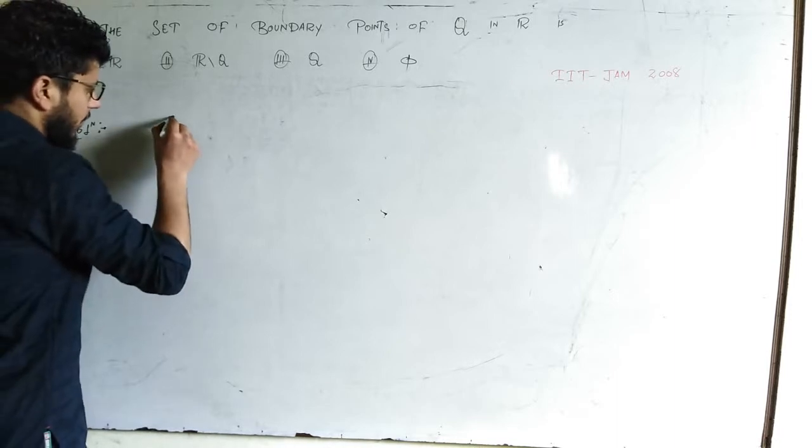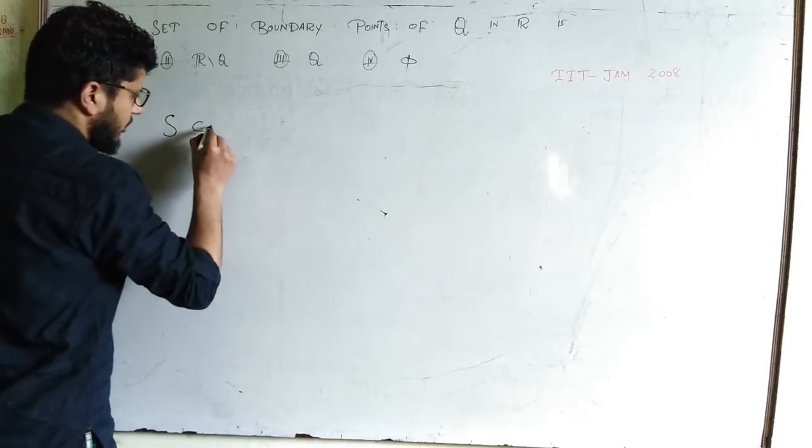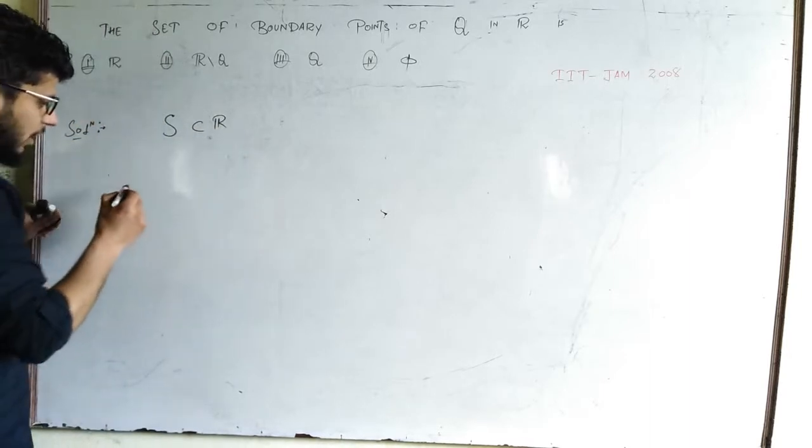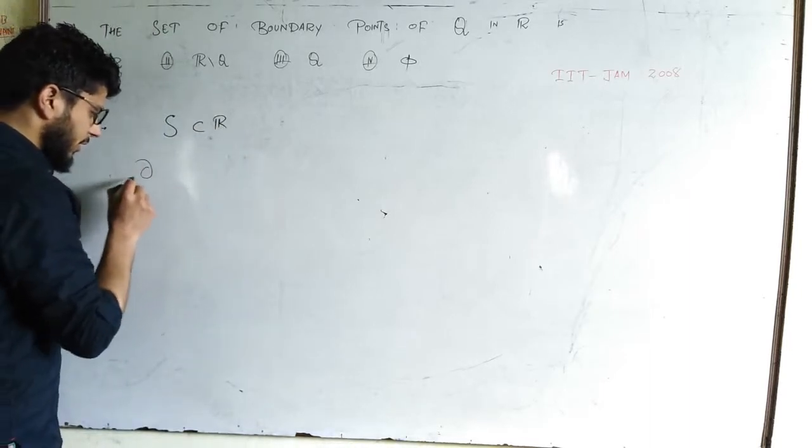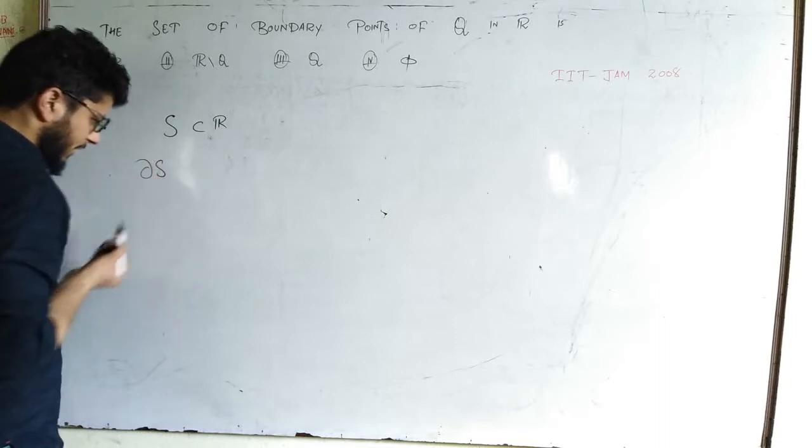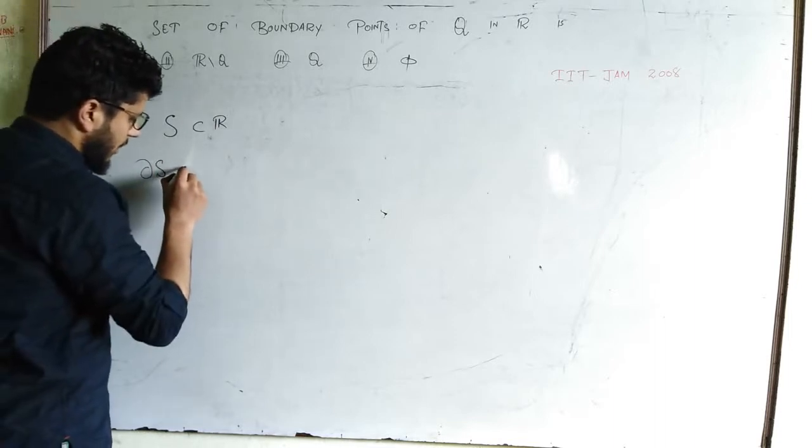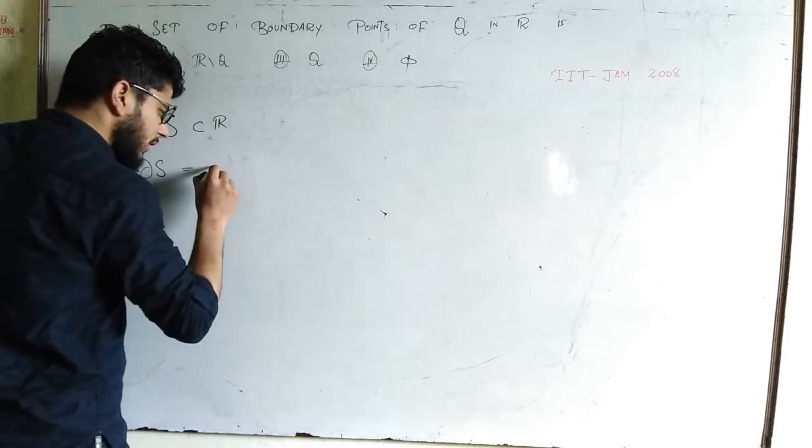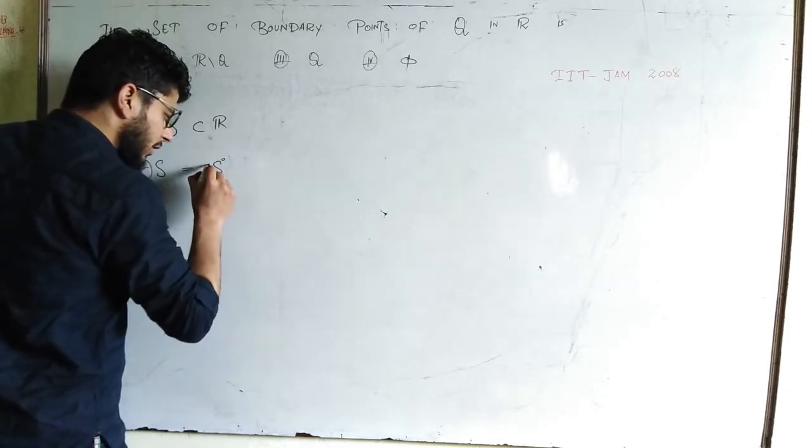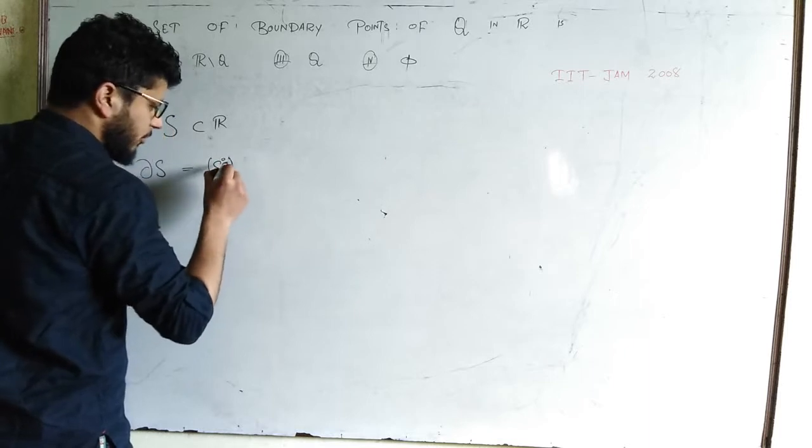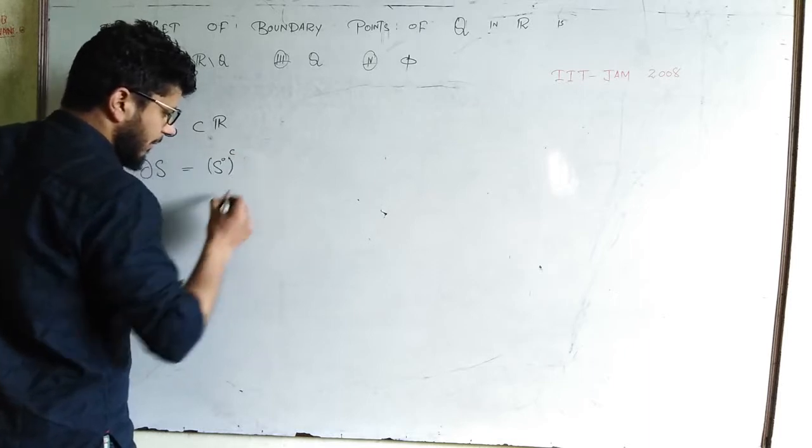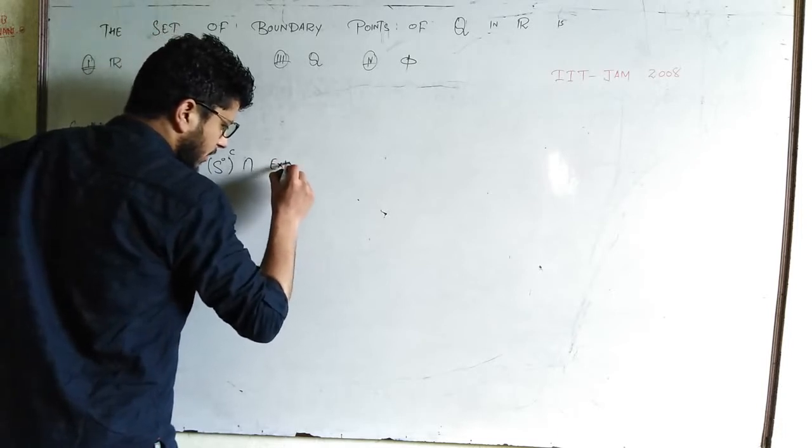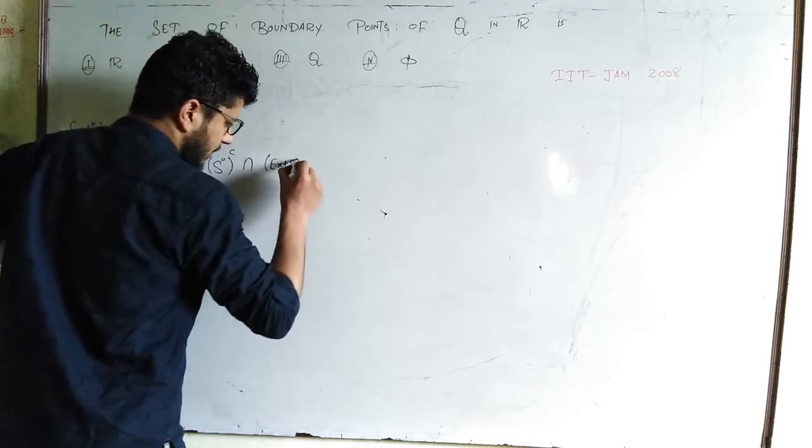Now, for example, I am given a set S that is a subset of R. Then the boundary points, they are denoted by this symbol. They are equal to interior, set of interior points of S complement, intersection exterior points of S complement.